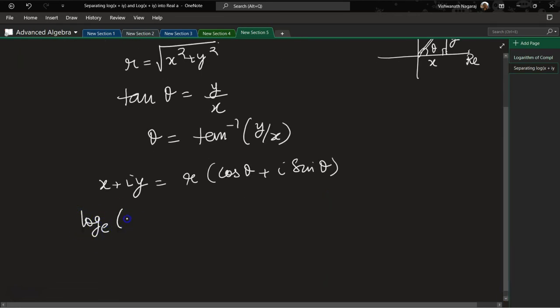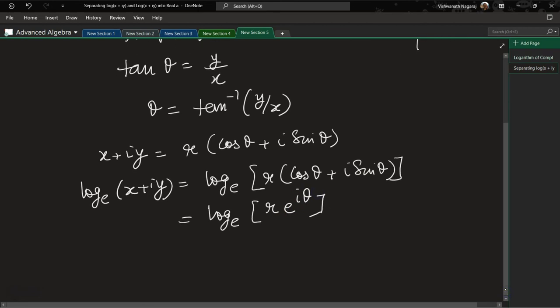So log_e(x + iy) is equal to log_e of r times (cos θ + i sin θ). Now see, this is where you need to remember certain things. Remember cos θ + i sin θ can also be written as e^(iθ), exponential form.